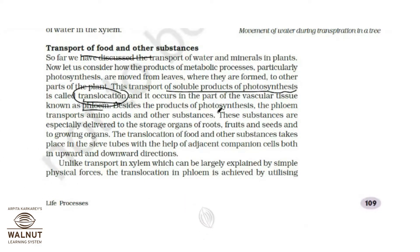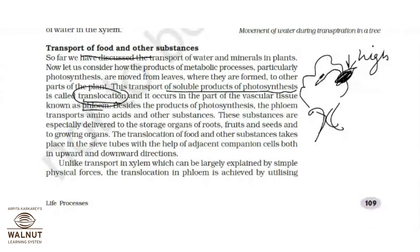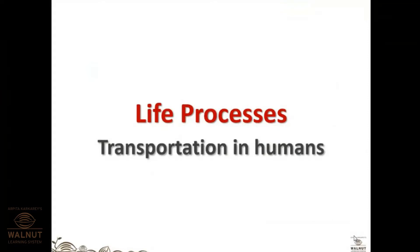In a plant, leaves prepare food, so the concentration of food material in the leaf is high. In the rest of the plant the concentration is low, so food moves from a region of high concentration to low concentration — this is how food is distributed to each and every part of the plant cell, using phloem components.